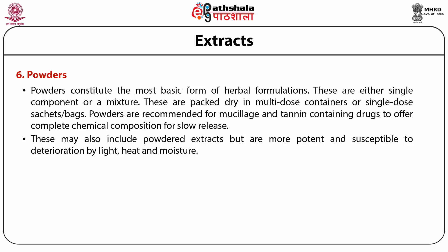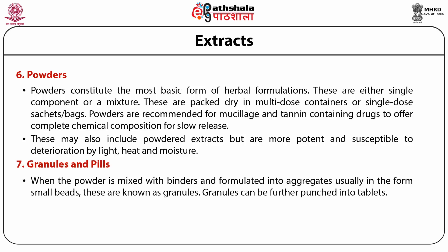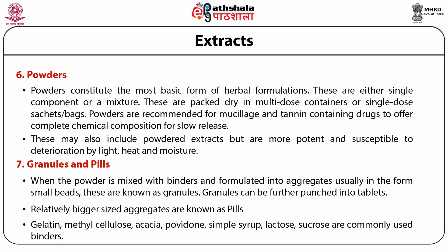The seventh form is granules and pills. In granules, the powder is aggregated with binders and formulated into smaller beads; granules can be further punched into tablets. Relatively larger aggregates are known as pills. Materials used as binders include gelatin, methylcellulose, acacia, povidone, simple syrup, lactose, sucrose, etc.